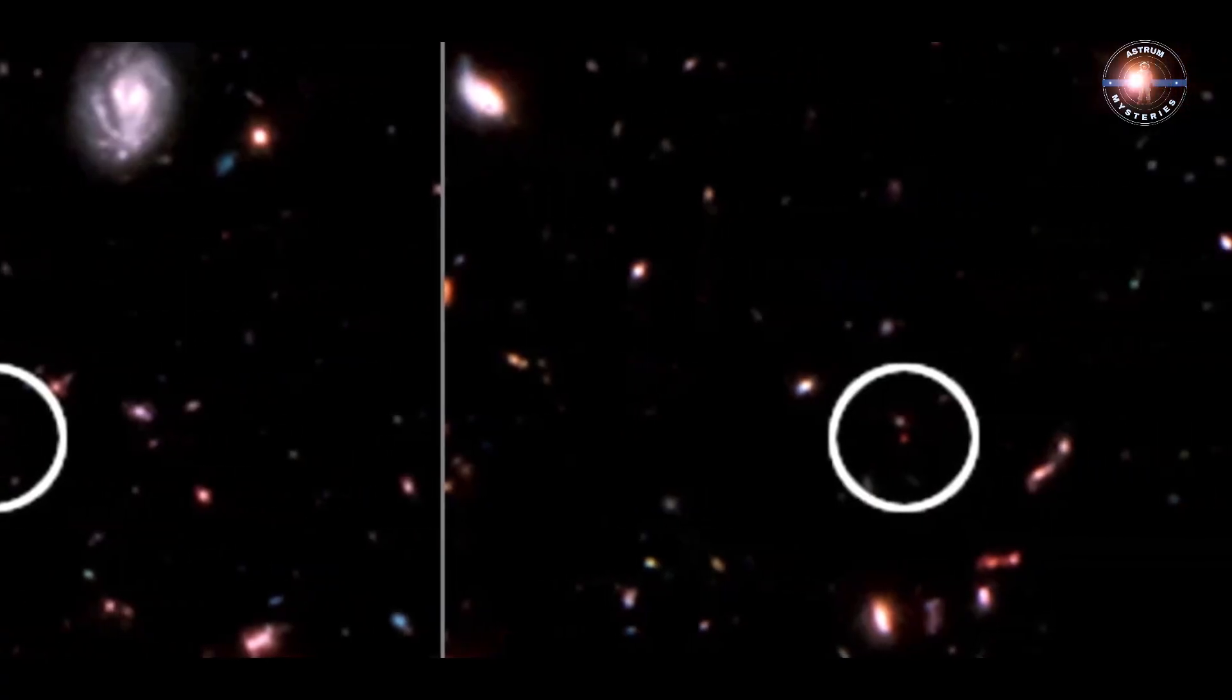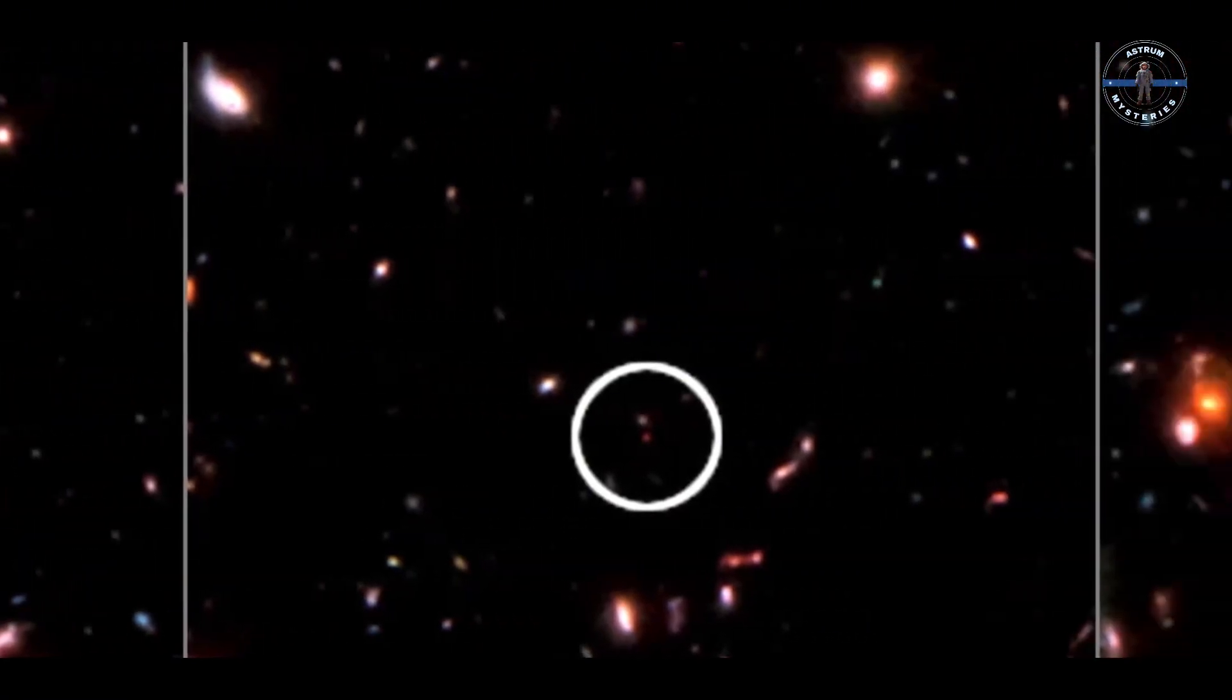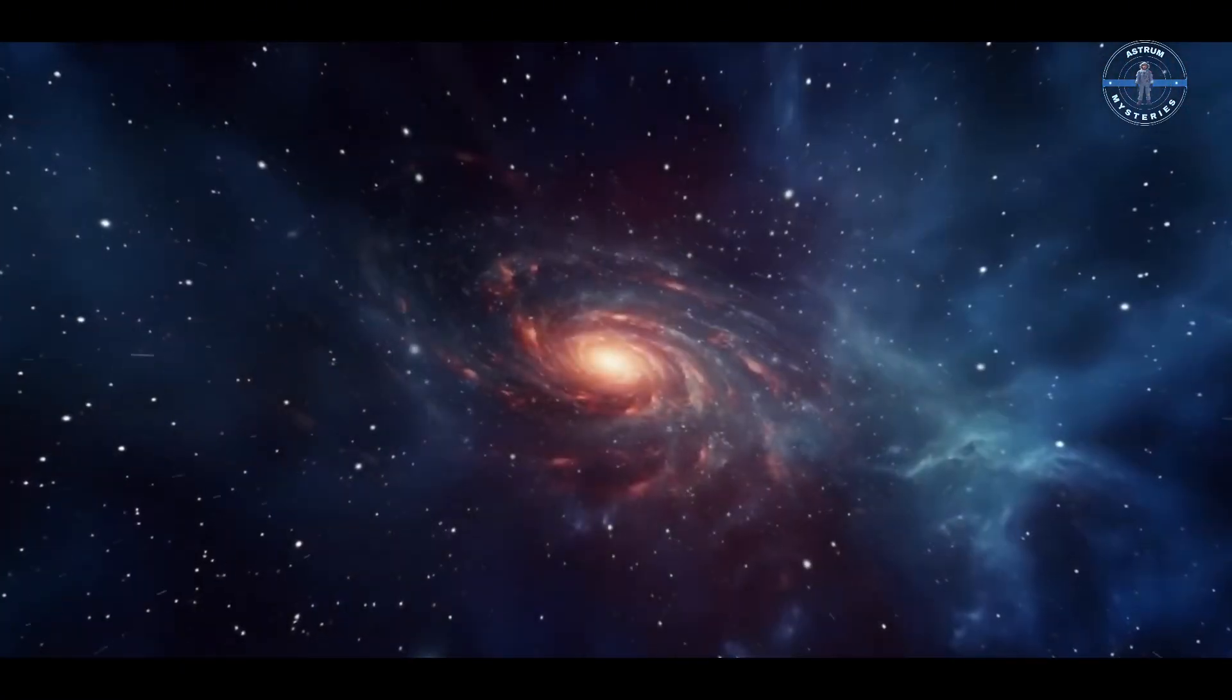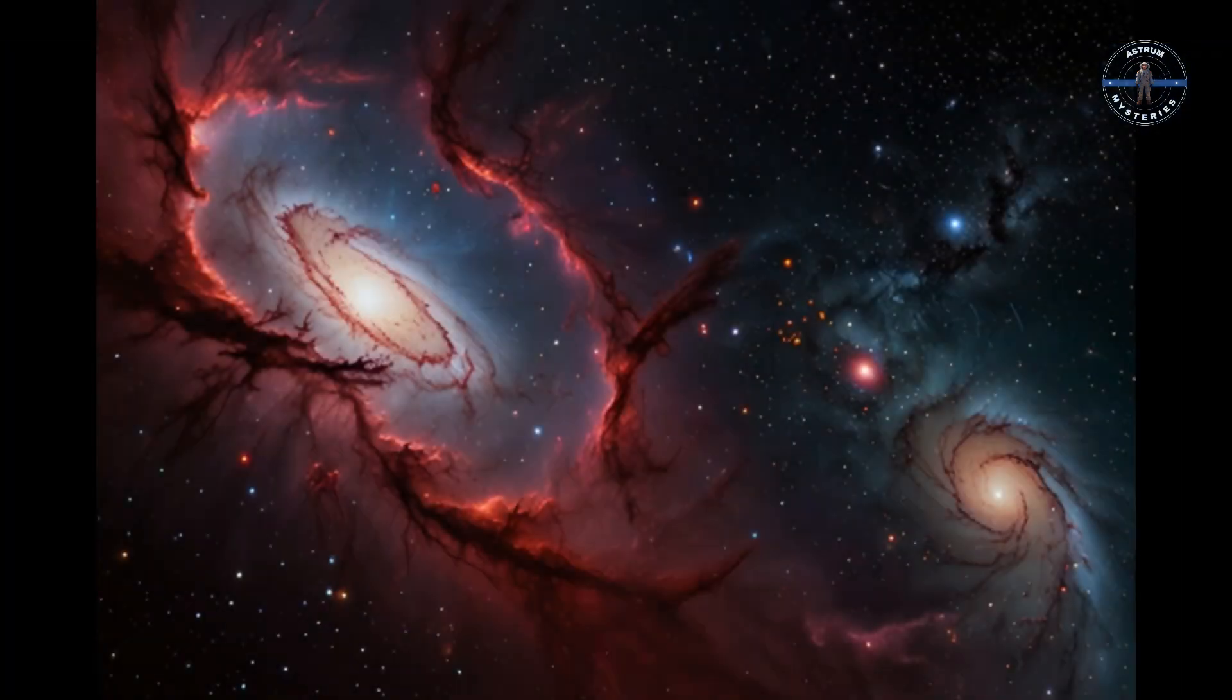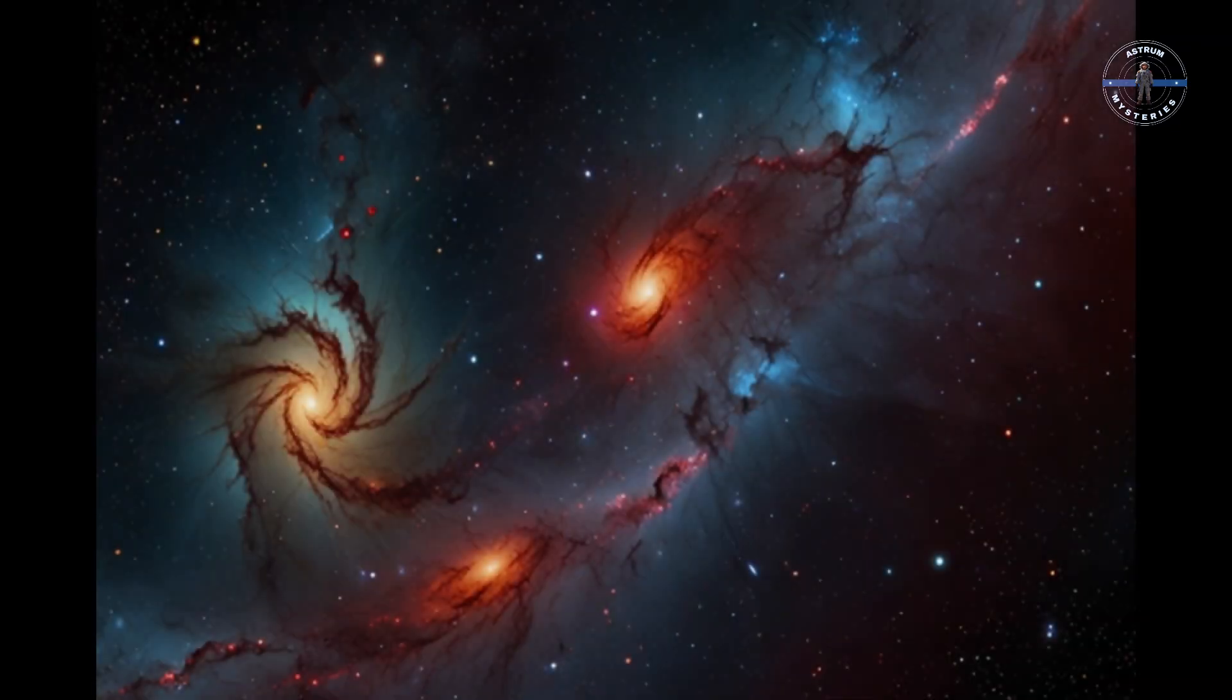These red monster galaxies are bigger than the Milky Way, packed with stars, and aged well beyond what science said was possible. They're called red because they appear in infrared light, a signal that they're old and far away, stretching across billions of light-years of space.